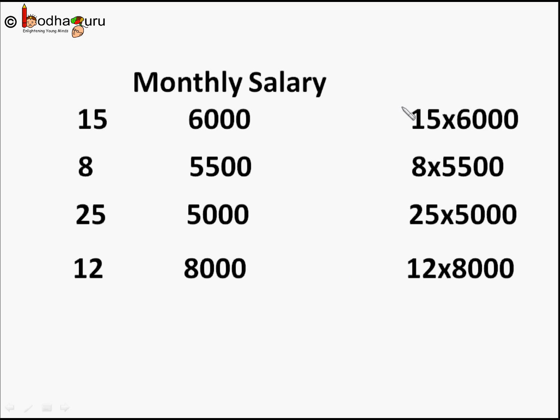So here we can see each term in the sum is actually product of two terms as one number repeats many times during the observation. So there is no point in writing 6000 fifteen times. Instead, we easily got the total sum of people earning 6000 Rs. by multiplying 15 by 6000.